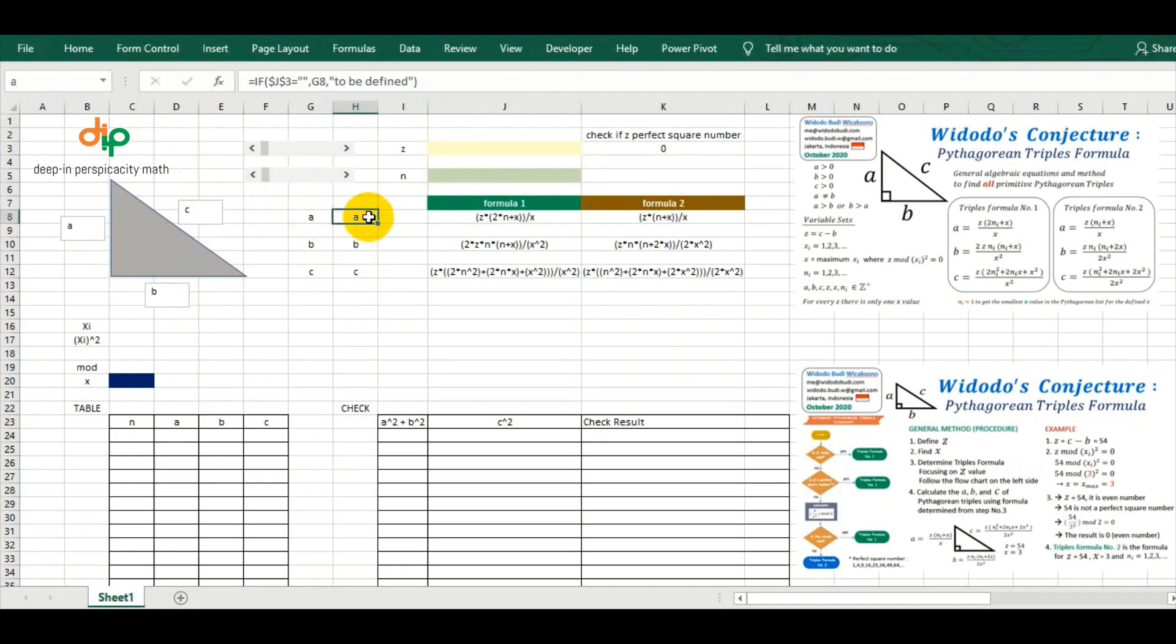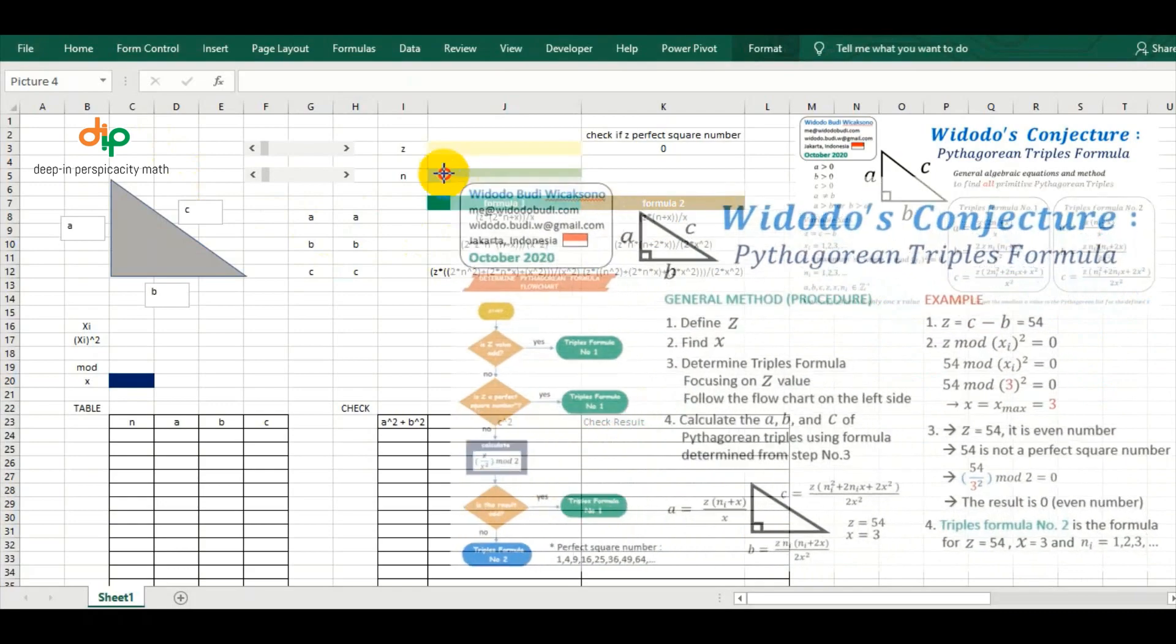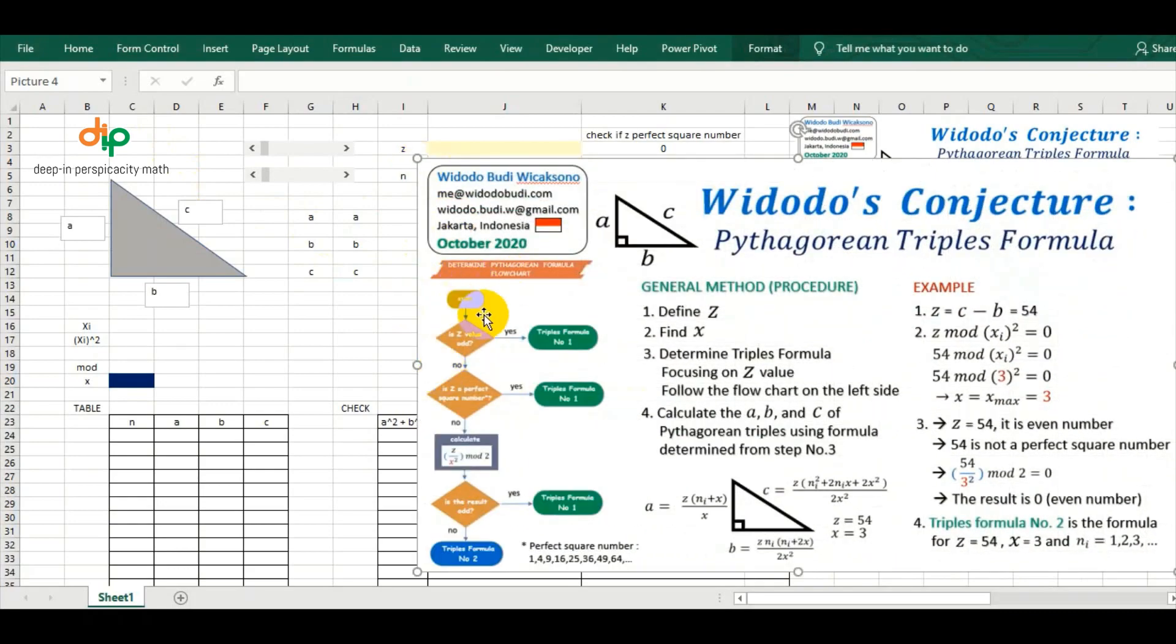Put the cursor on cell H8. We are going to define the value of A using the algorithm in the flowchart. We are starting from the top procedure to the bottom.